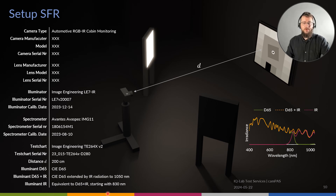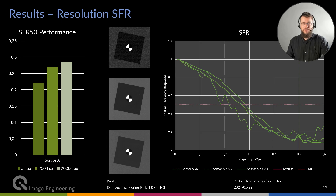Next is our setup for spatial frequency response, also as mentioned in IEEE P2020. We use IQ flat lights — multispectral light sources — to generate various spectra and spectral luminance for evaluation. We use the specified slanted edge chart from the IEEE P2020 standard and evaluate the edge SFR. Typical results show the SFR50 performance for different illuminances — for example, 5 lux, 200 lux, and 2000 lux at the chart. We can go as low as 0.1 lux on the chart.